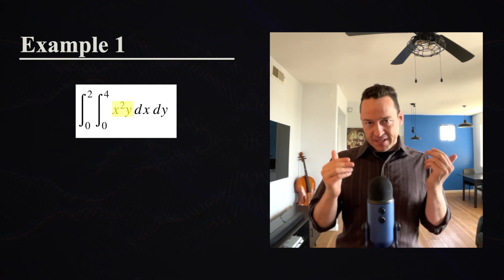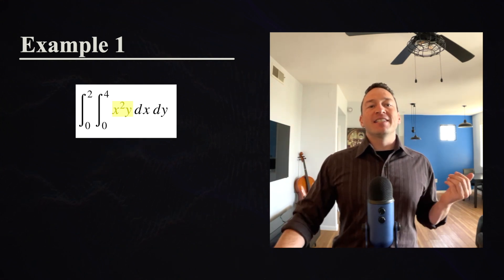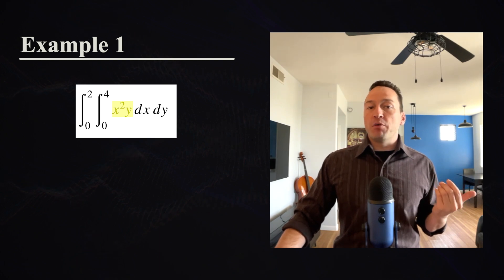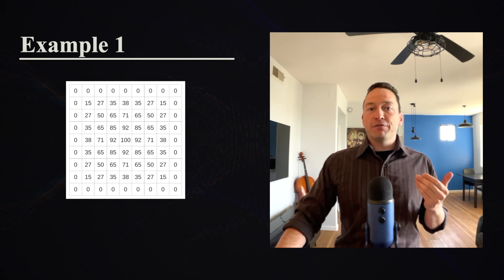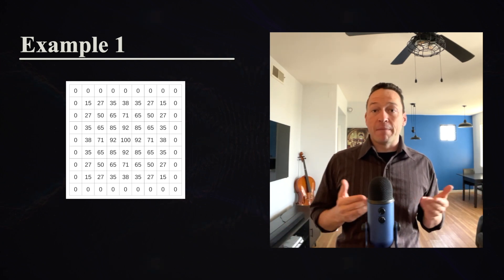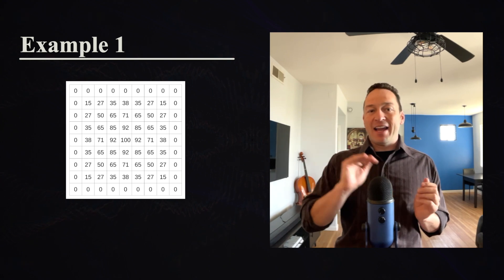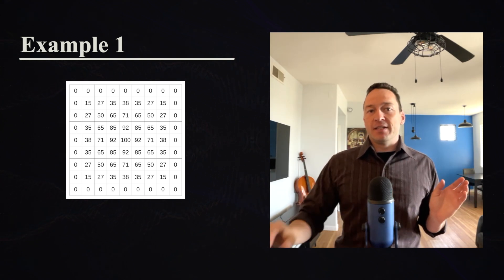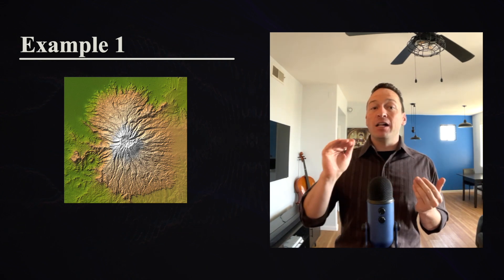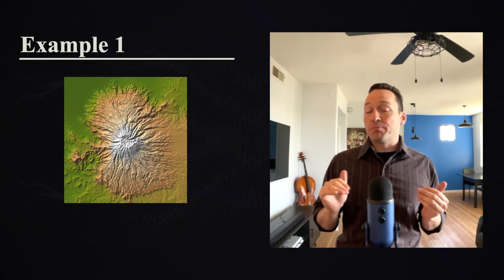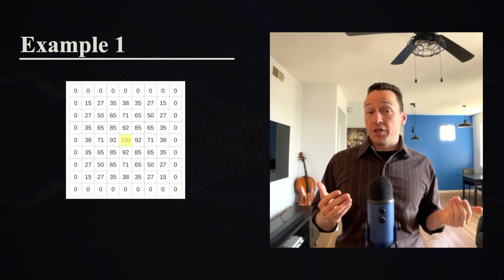The integrand — the stuff inside the integral — is what we call a scalar field. A scalar field assigns a value to different points in space; it's a field of numbers at different locations. These values could represent many different things, but let's think of them as representing heights. Each number represents a different height, and the scalar field as a whole would represent altitudes at different positions, perhaps along a mountain. The center of this scalar field would refer to the top of the mountain — notice it has the highest value.